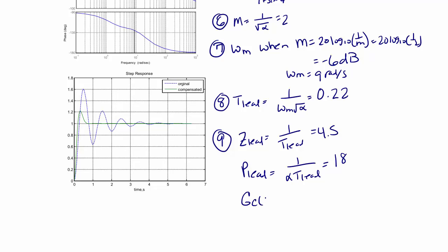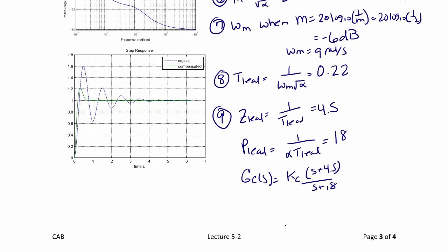So far our compensator GC of S is equal to the gain KC times S plus 4.5 over S plus 18. Finally, step 10 is to find the gain on the compensator. KC is equal to 1 over alpha, or 4. So our final compensator is 4 times S plus 4.5 over S plus 18.